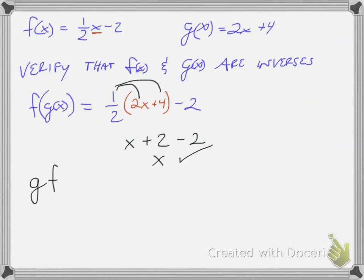You could have done it this way as well, g of f of x. So I have 2 times one half x minus 2 plus 4. When I distribute the 2, that becomes 1x minus 4 plus 4, the 4s cancel out, I'm left with x.